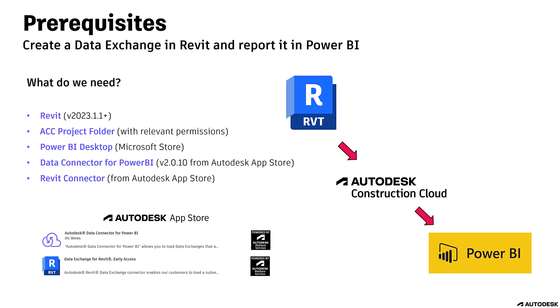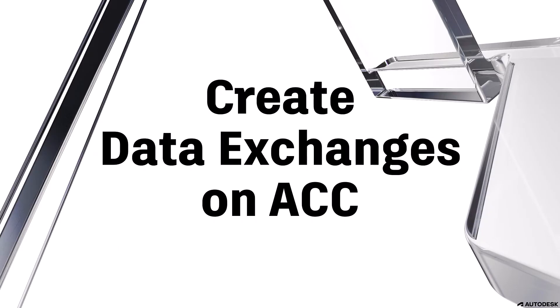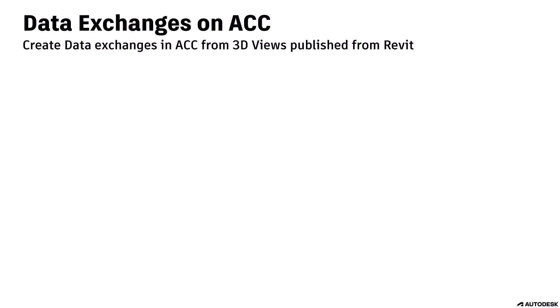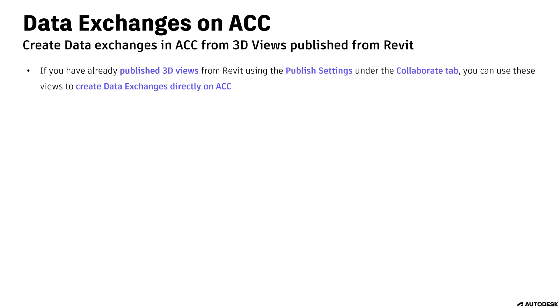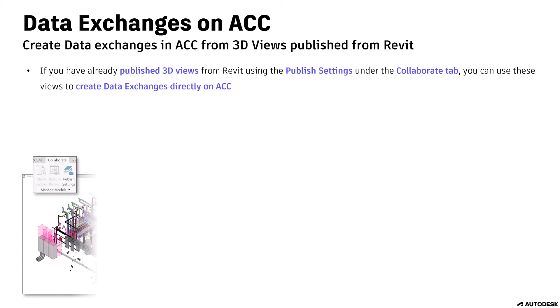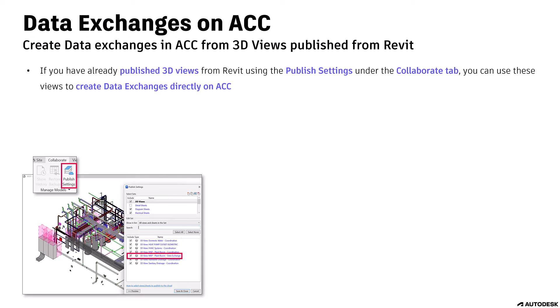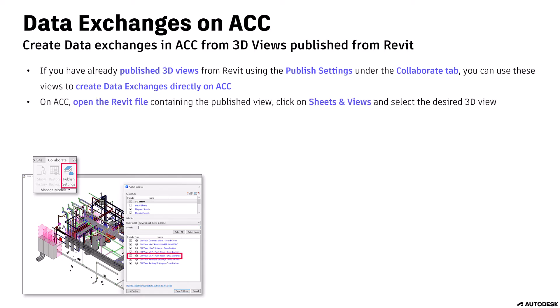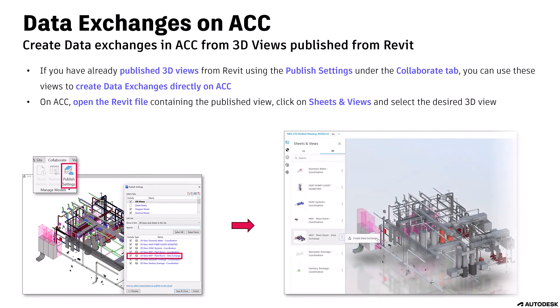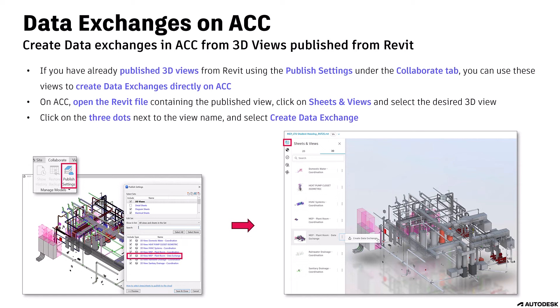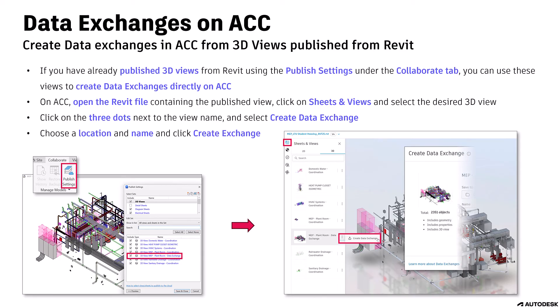You can find the relevant links in the video description below. To create data exchanges on ACC: if you have already published 3D views from Revit using the published settings under the Collaborate tab, you can use these views to create data exchanges directly on ACC. On ACC, open the Revit file containing the published view, click on Sheets and Views, and select the desired 3D view. Click on the three dots next to the view name and select Create Data Exchange. Choose a location and name, and click Create Exchange.